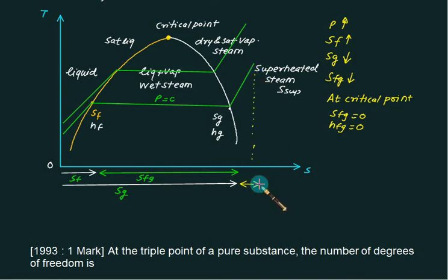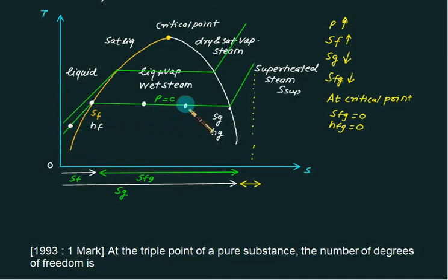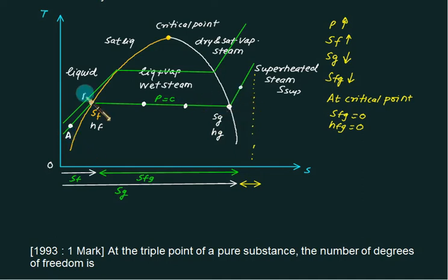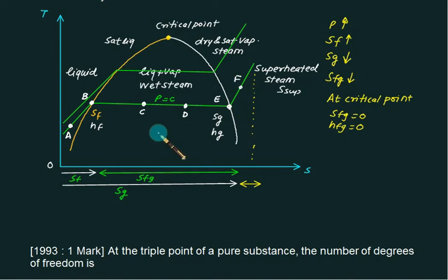We are now interested in property calculation. A point with temperature lower than the saturation temperature represents subcooled liquid; a point at saturation temperature on the saturated liquid line represents saturated liquid; points inside the dome represent wet steam; the right boundary of the dome is dry and saturated steam; and a point to the right is superheated steam. We label these points A, B, C, D, E, and F — all lying on the same pressure line.